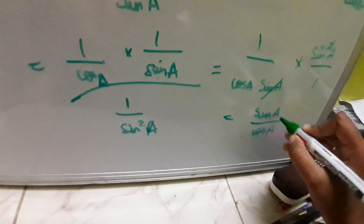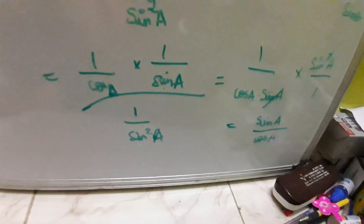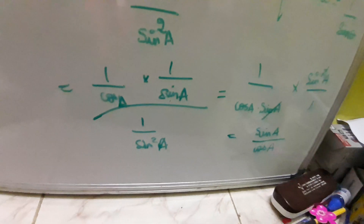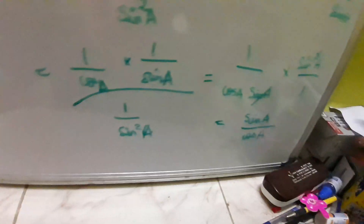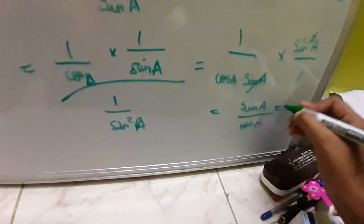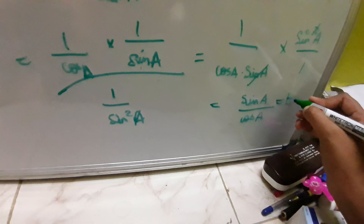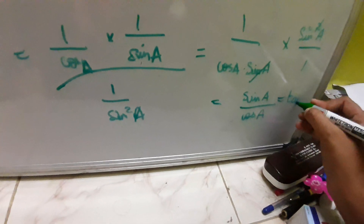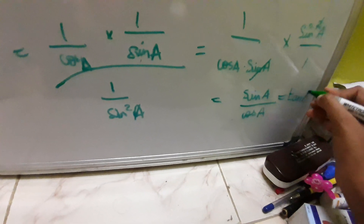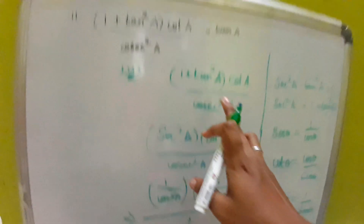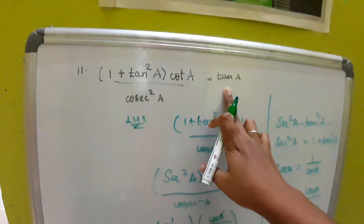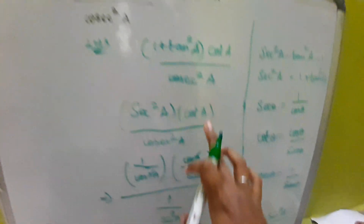We know the formula: sin theta divided by cos theta equals tan theta. So sin a by cos a equals tan a. We have proved the RHS. Yes, the LHS equals tan a, which is the RHS. Hence proved.